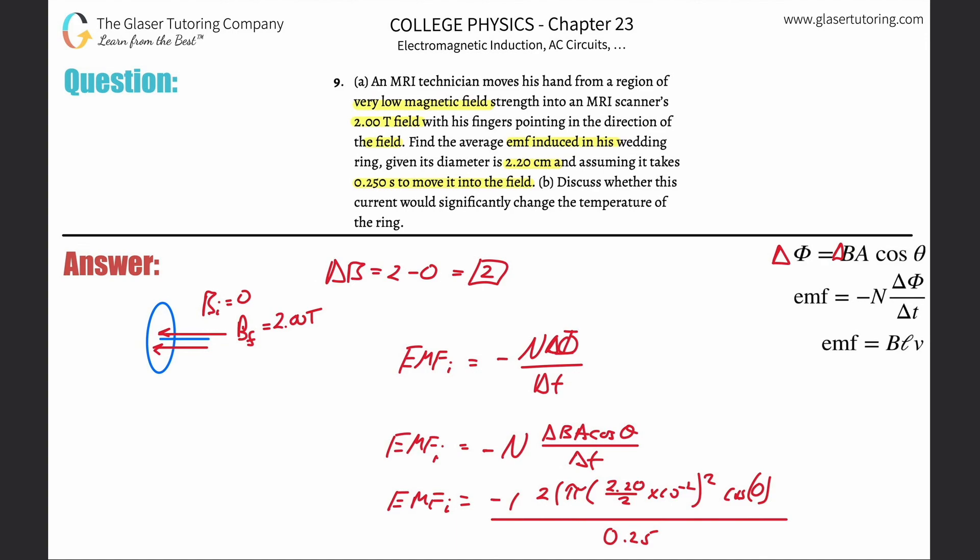So what do we get? We get negative, so negative I guess 3.04 times 10 to the 1, 2, 3, negative 3 volts. Or about 3 millivolts. Negative sign just kind of implies a directionality.